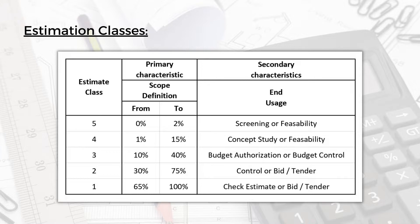The secondary characteristics are the end use, the methodology, the expected accuracy, and the efforts required for preparation. When we take a closer look: for class 5, the scope definition will be between 0% to 2% — we don't have the scope defined yet — and this class can be used for screening or feasibility. Class 4 has scope definition between 1% to 15%, used for concept study or feasibility. Class 3 has scope definition 10% to 40%, used for budget authorization or budget control. And class 2 has scope definition between 30% to 75%, used for control, bid, or tender.